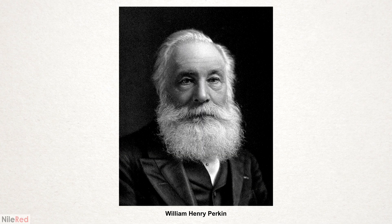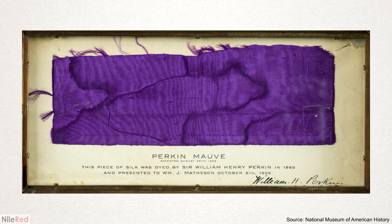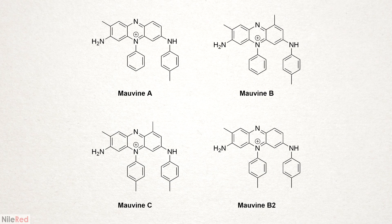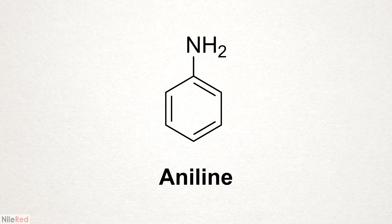The first synthetic dye was discovered accidentally in 1856 by William Henry Perkin when he was trying to make an anti-malarial drug. It was originally known as aniline purple or Perkin's mauve, but nowadays it's usually called mauveine. It turns out that mauveine is actually a mixture of molecules, but they're all based around one fundamental subunit — a molecule known as aniline.